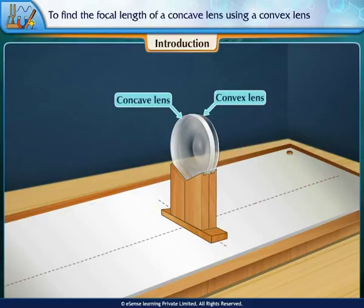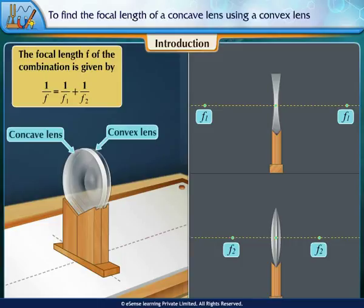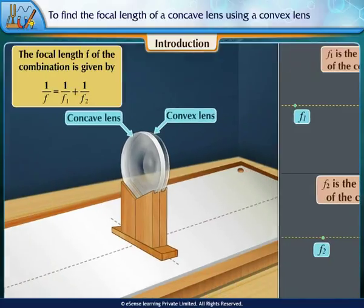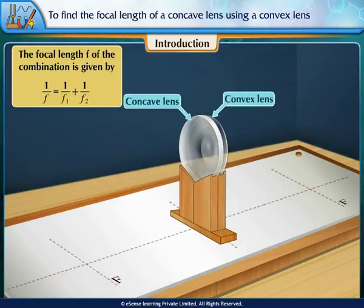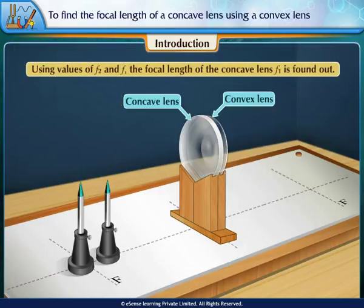In the case of two lenses in close contact forming a converging lens, the focal length F of the combination is given by 1/F = 1/F1 + 1/F2, where F1 and F2 are the focal lengths of the concave and convex lenses respectively. The focal length F2 of the convex lens and the focal length F of the combination are separately found using the two-pin parallax method. Using values of F2 and F, the focal length of the concave lens F1 is found out.